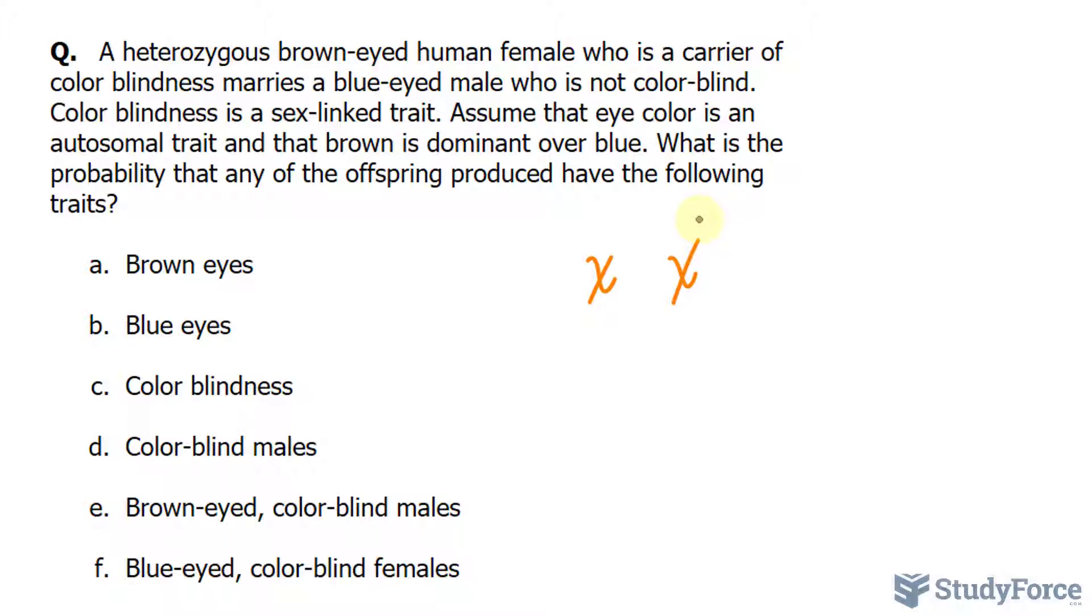In order to have colorblindness as a female, you have to have inherited the recessive allele on both X chromosomes. Since this person is a carrier, only one of the X chromosomes will have this allele.